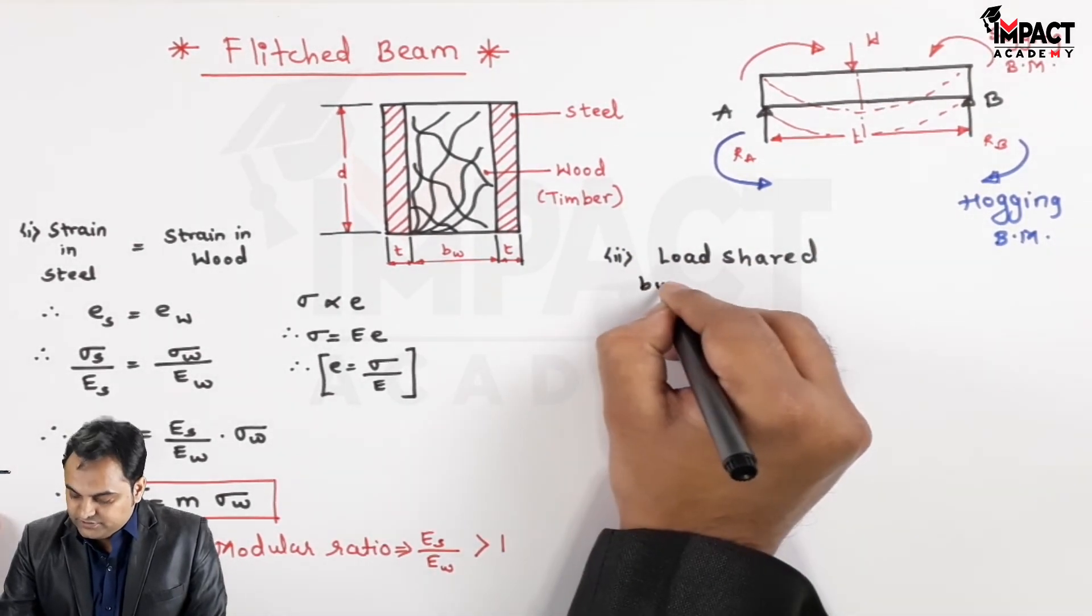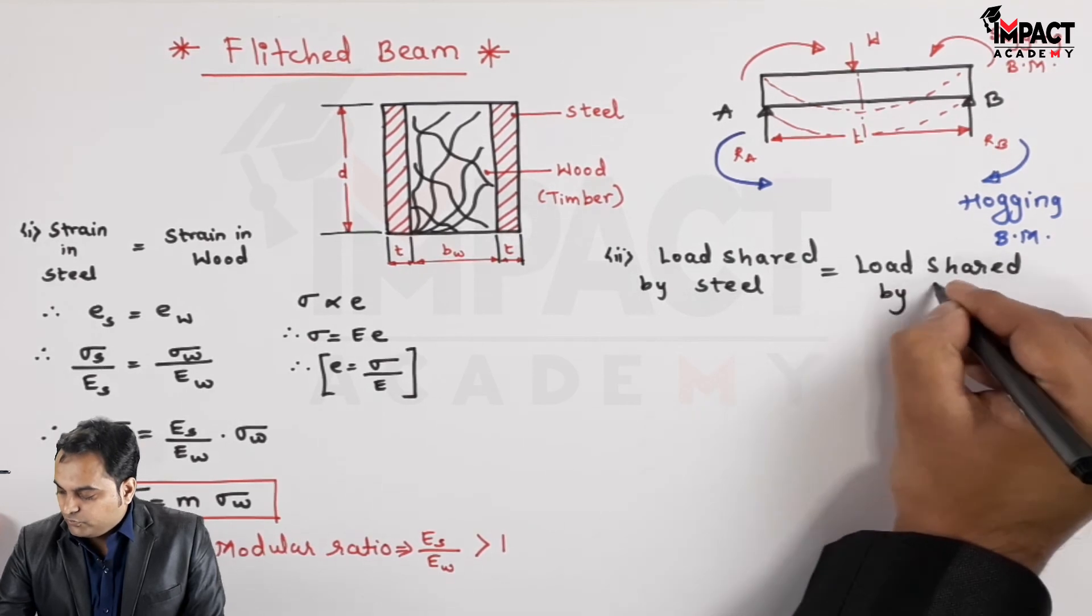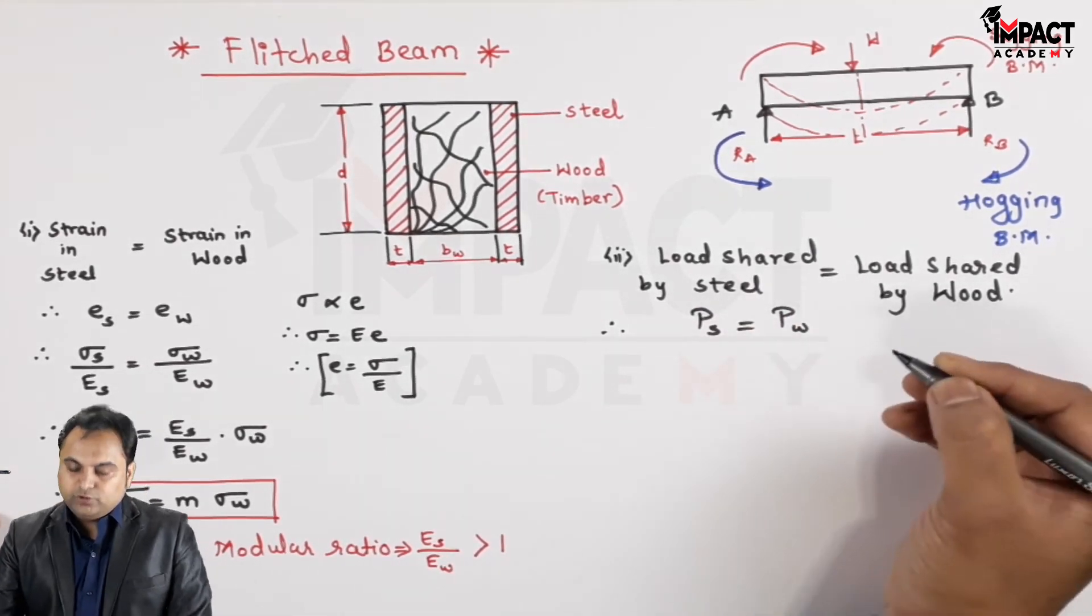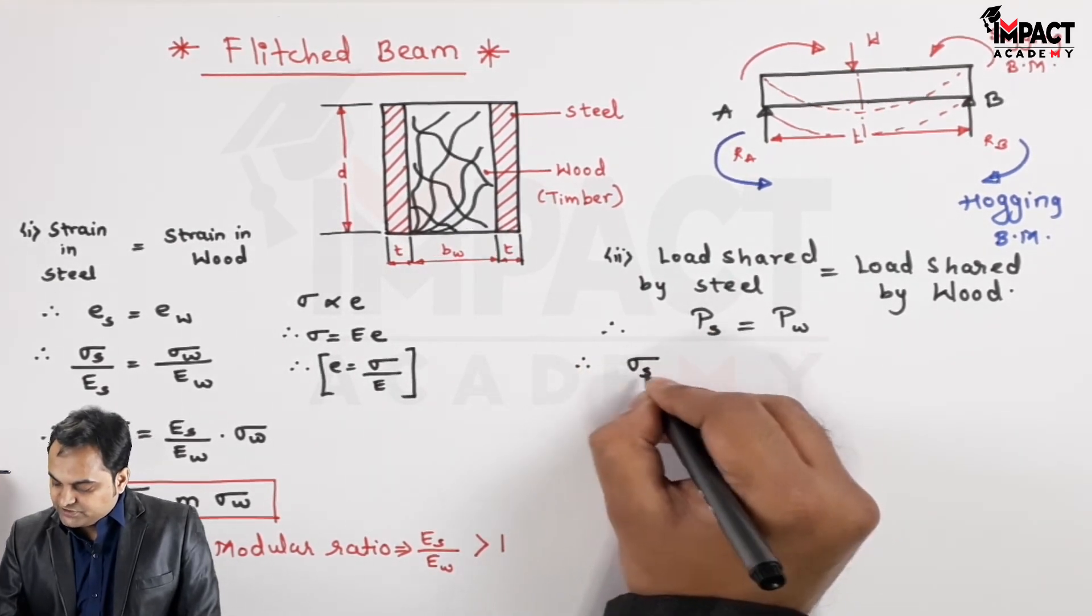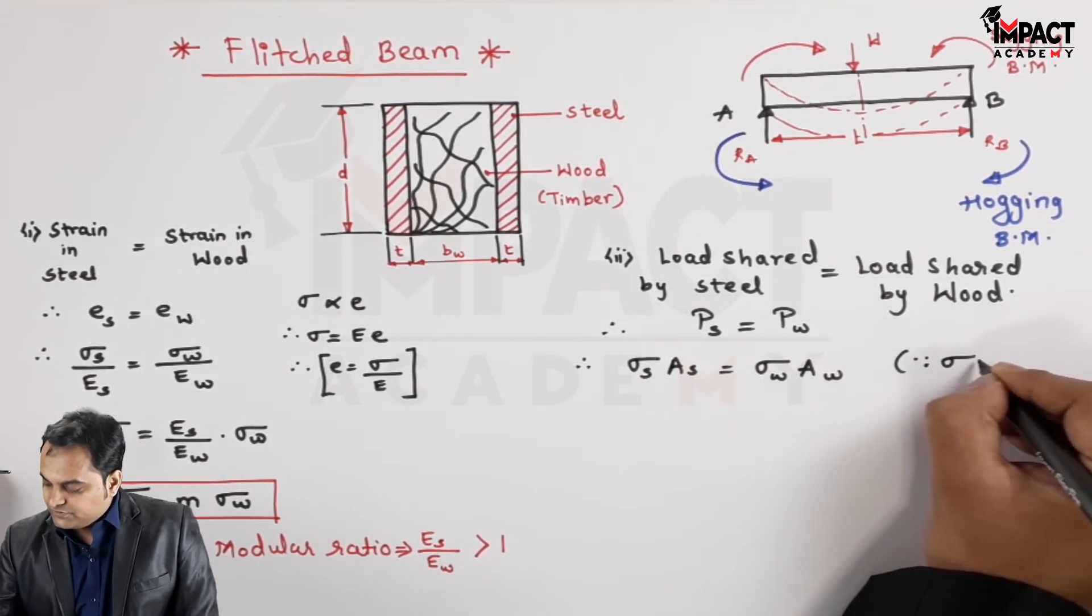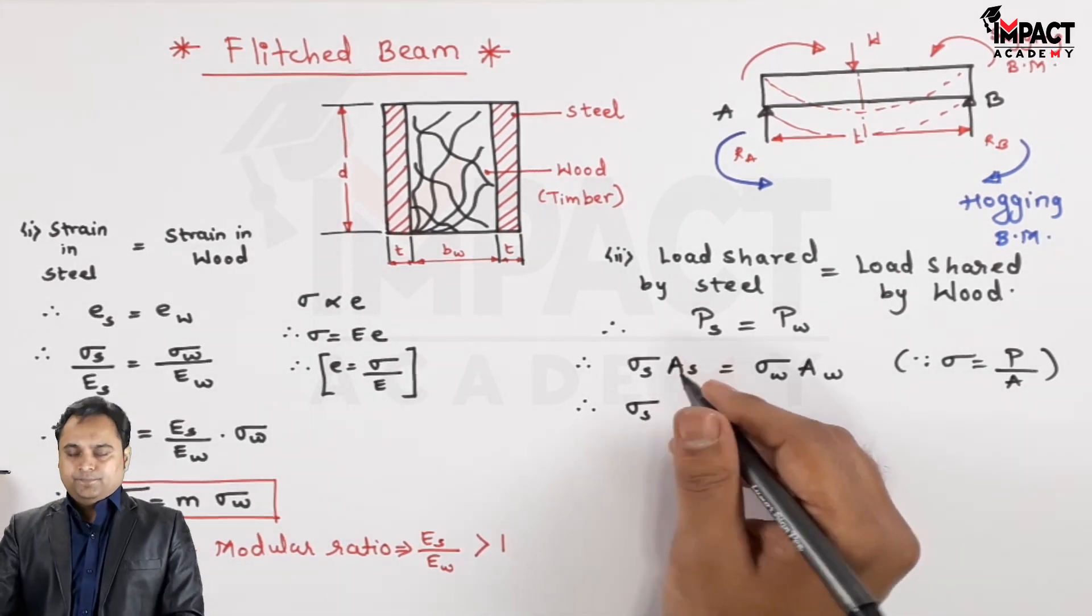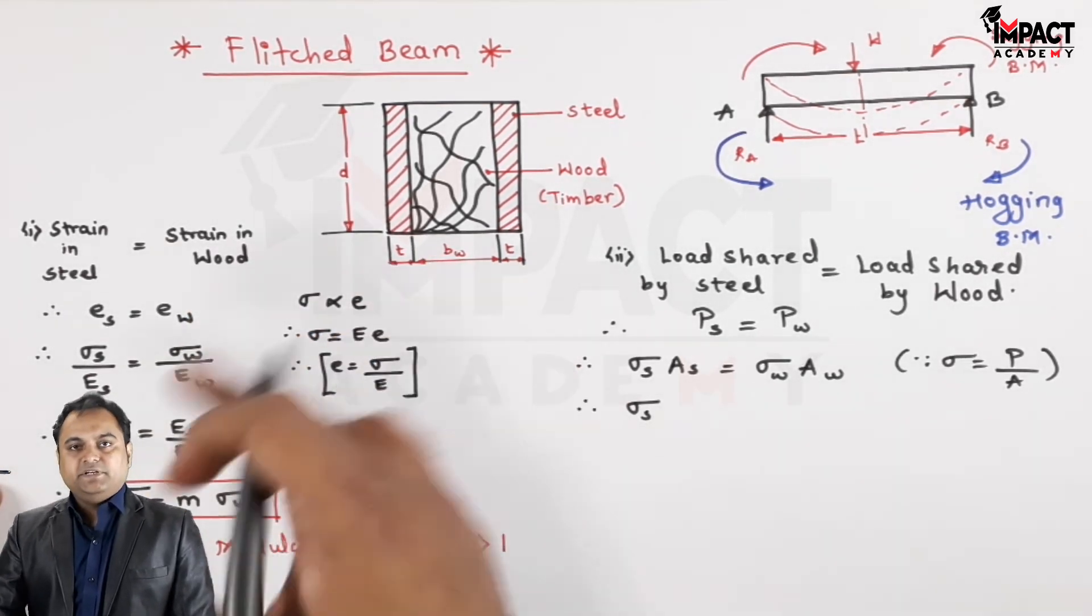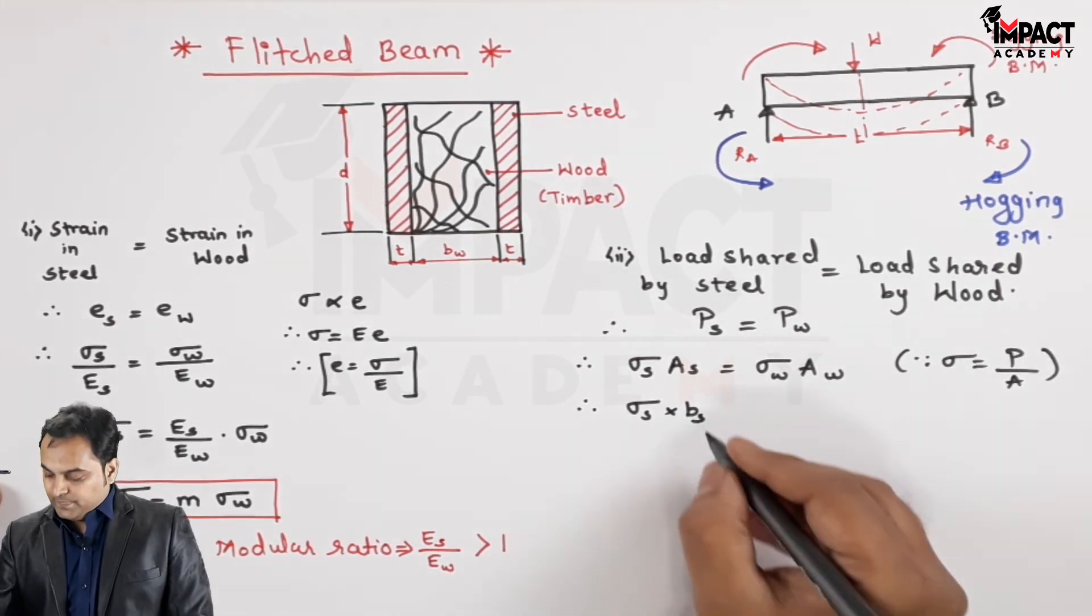Load shared by steel would be equal to the load shared by wood or timber. Load is denoted by P subscript s for steel. Both would be resisting the load which is equal, and load is nothing but stress into area. Since stress is load upon area, so load becomes stress into area. Therefore, the area of steel is having here twice of the thickness into d. That twice of the thickness can be taken as the total width of the steel, so it would be b subscript s, the width of steel, into the depth of steel, that is the total area.